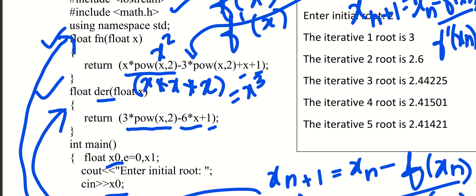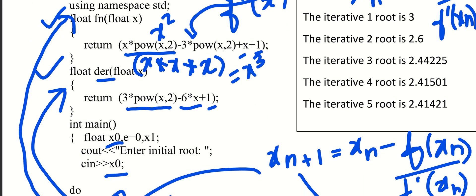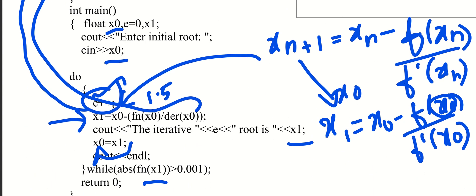The Newton-Raphson method uses two functions: the equation f of x and its derivative f dash of x. We read the initial root x0, then perform the iteration. We declare the value, write the formula x1 = x0 - f(x0)/f'(x0), assign x1 back to x0, and continue while the absolute value of f of x1 is greater than 0.001.